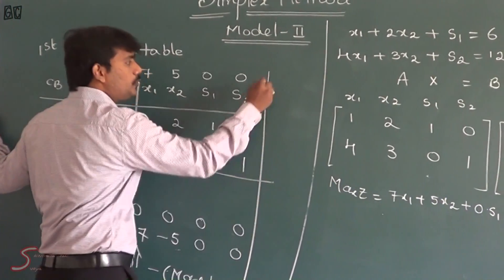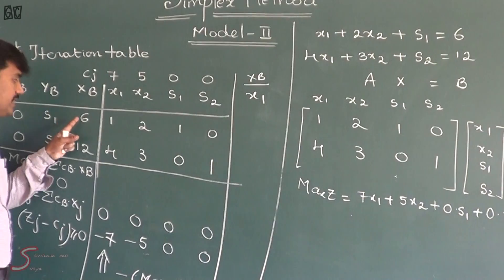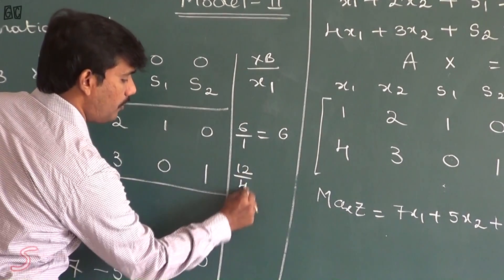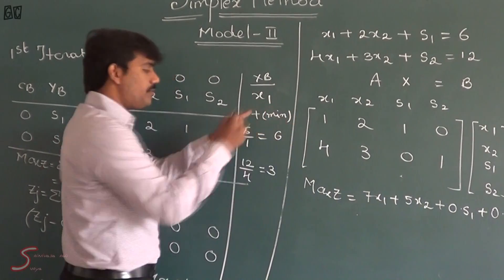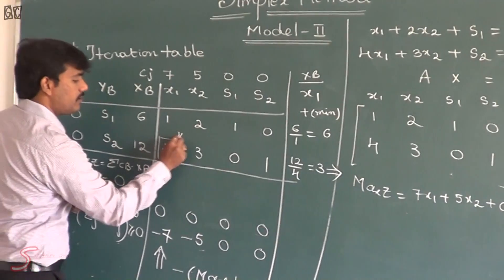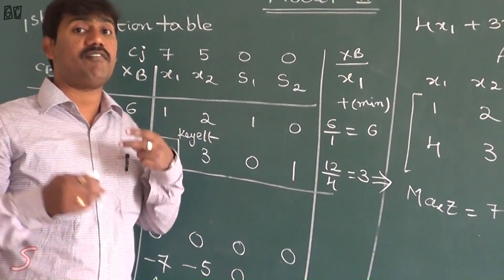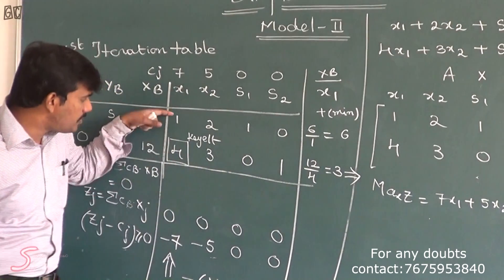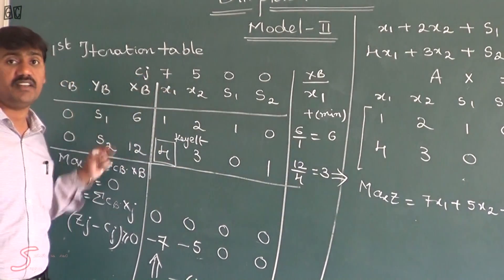After this, we have the minimum ratio test. The formula is xb divided by xj, where xj represents the x1 column. So: 6 divided by 1 equals 6, and 12 divided by 4 equals 3. Here we have the minus of maximum as minus 7, so we take the plus of minimum, which is 3. Combining these two — the column with minus 7 and the row with minimum ratio 3 — we get the key element, which is 4. Because of this key element, we are not satisfying the net evaluation condition. So we move to the next iteration. x1 is the incoming vector and s2 is the outgoing vector.